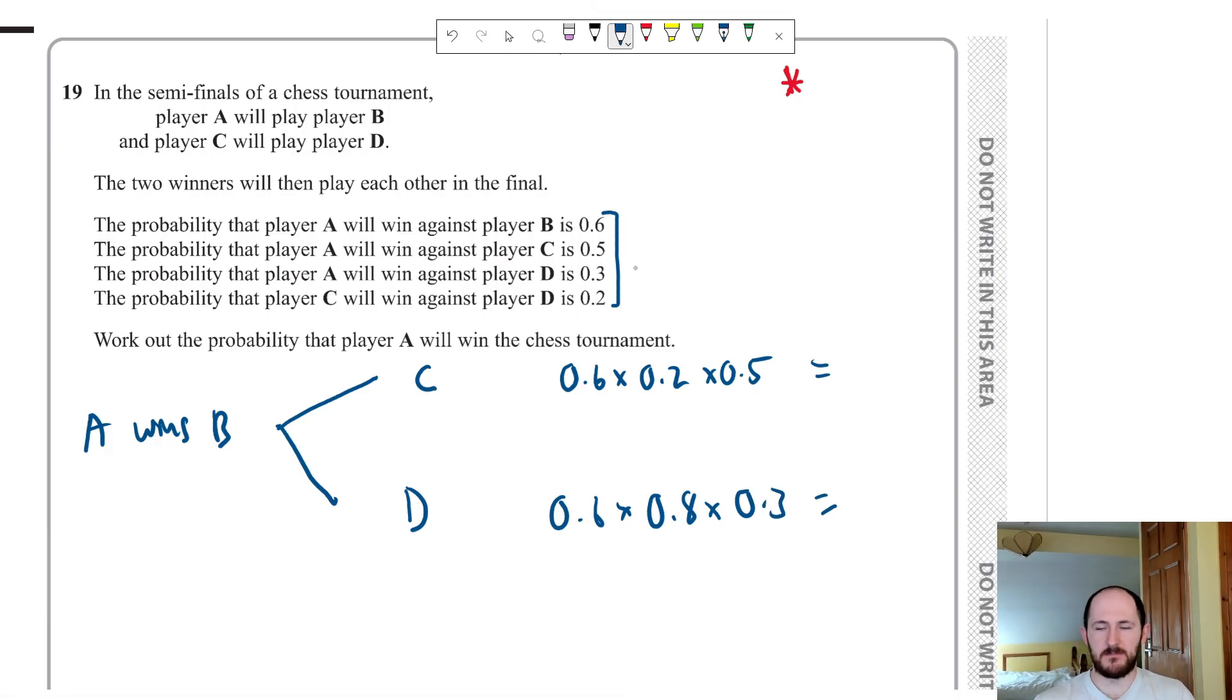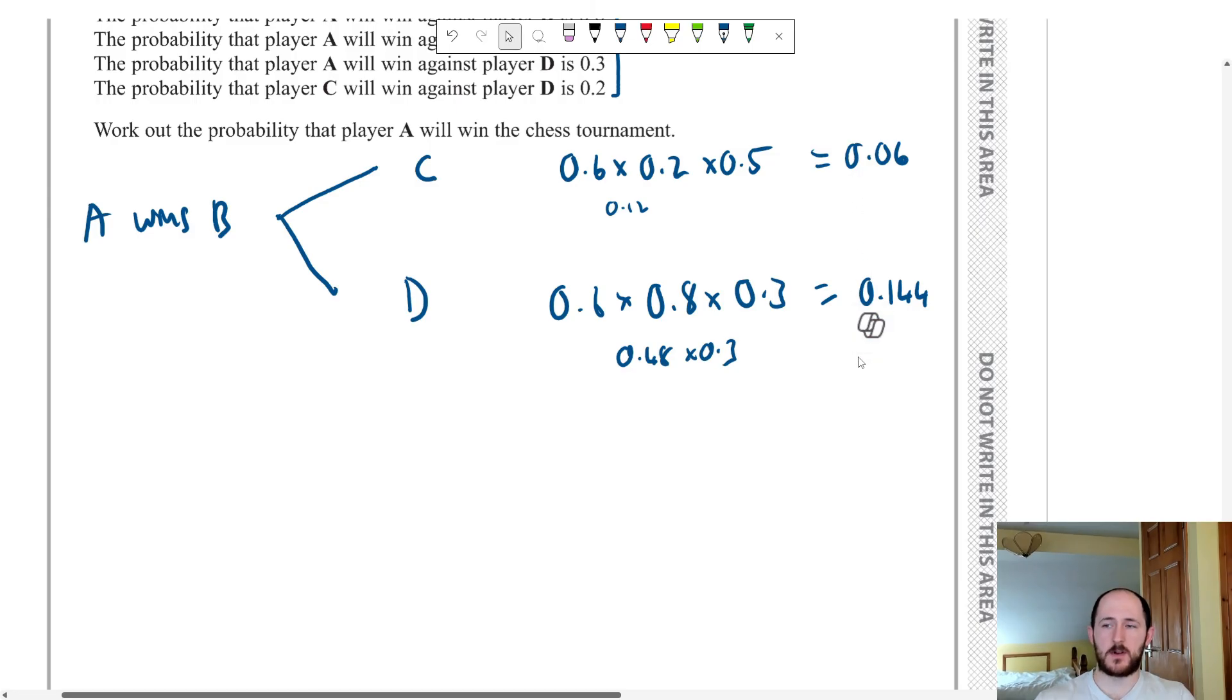So those are the two combinations that can work, right? But hopefully you can see why this is a little bit tricky, because there's technically a hidden probability tree under here. But if we multiply all of this together, we should get the right answer. So we have 0.6 times 0.2 is 0.12. Times 0.5 would be 0.06. Then here, let's do 0.6 times 0.8 is 0.48. And then times 0.3, which would give me... Yep. And then that means, since either of those combinations will work, the probability that they will win, is just adding those two together.